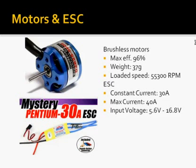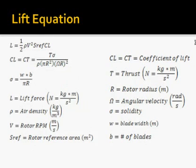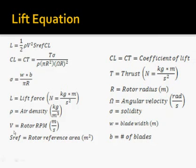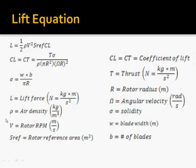These electronic speed controllers have a constant current rating of 30 amps and we'll be running them at an input voltage of about 12 volts. Right here you can see the lift equations we're going to use to model the helicopter. Starting from the top left, we have the lift equation giving lift in newtons, then the coefficient of lift Cl, then sigma — which equals the blade width times the number of blades divided by pi times r, where r is the blade radius. The other variables are: rho for air density, S reference for the rotor reference area in meters squared, T for thrust, omega for angular velocity, and sigma for solidity. The only variable that changes in our equation is the rotor RPM; everything else is given.